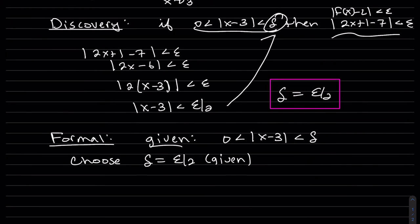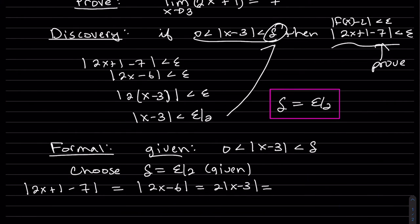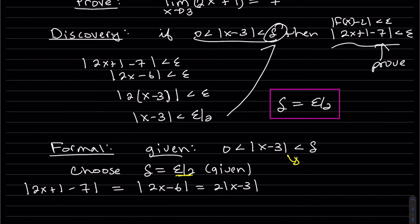And we start with the left-hand side. We want to prove that. Simplify it. And if we have that, I multiply all sides by 2. This is less than 2 delta.